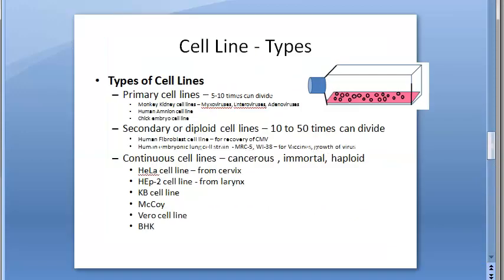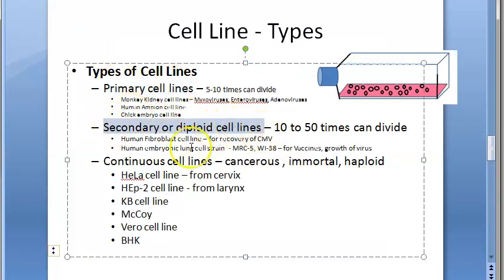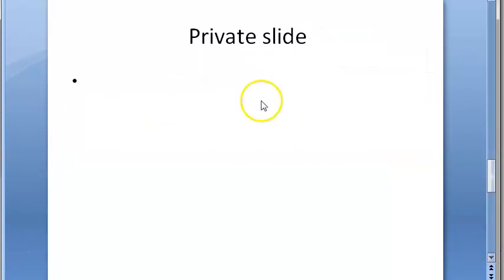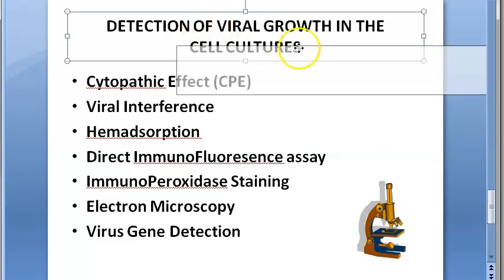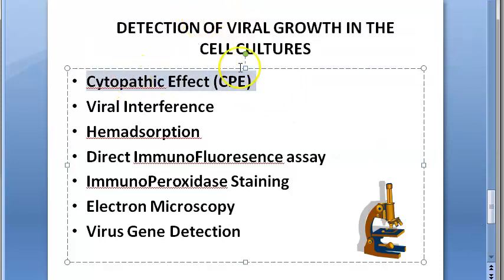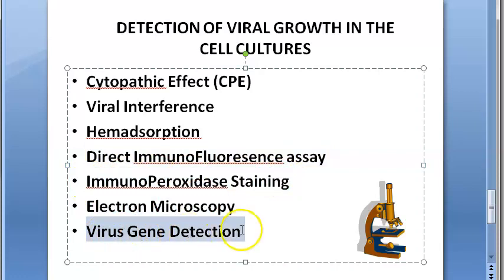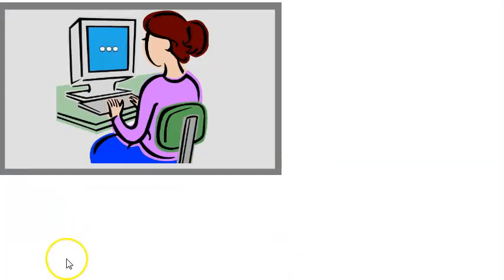We have finished the three types of cell lines: primary, secondary/diploid, and continuous. In the next video, we will cover detection of viral growth, including cytopathic effect, viral interference, hemagglutination, direct immunofluorescence assay, immunoperoxidase staining, electron microscopy, and virus gene detection. Cytopathic effects are a very important topic covered in the next video.